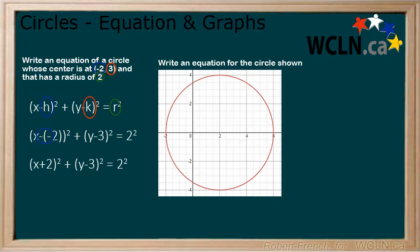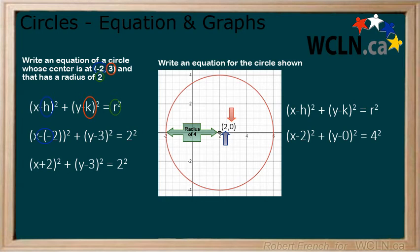Next question. Write down the equation of the circle shown. Looking at the graph, we find the centre which is at (2,0). From here, we find the distance of the radius which is 4 units. Now write down the equation, then substitute in the values from the graph. h is replaced with 2, k with 0, and r with 4.